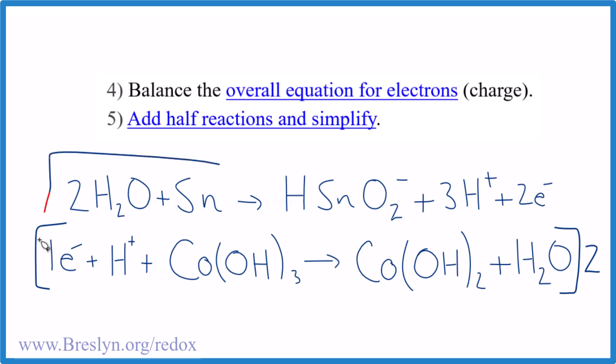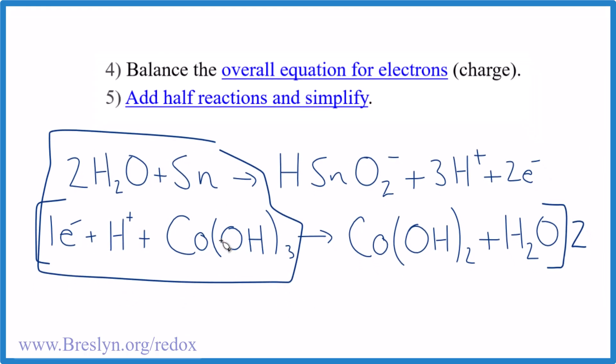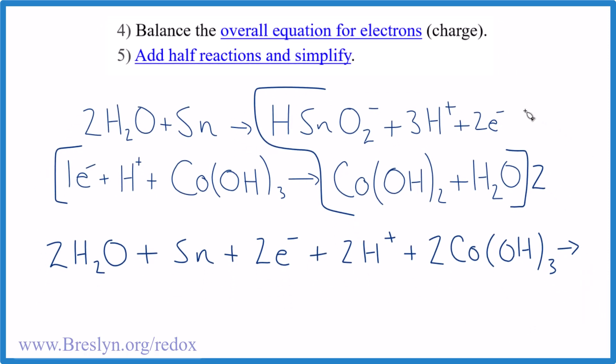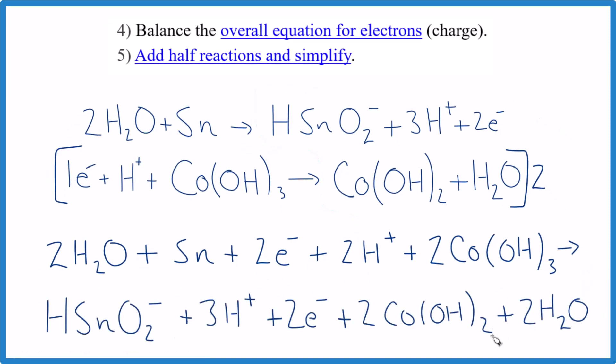We're going to take all these reactants here, and then I had to multiply by two—that's why everything has a two in front of it here. Now I'll do the products. I took all of these here, down here, and two times the cobalt hydroxide and two times the water. Now all of this should be balanced, but we can cross some things out that are the same on both sides.